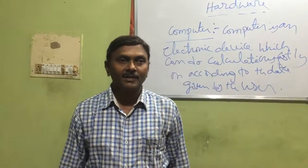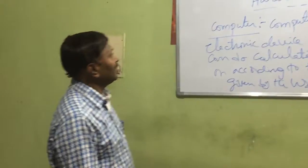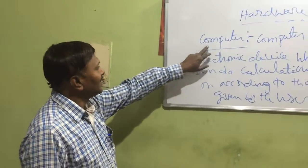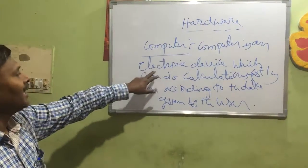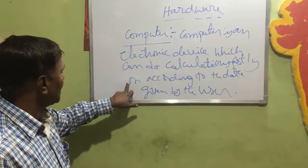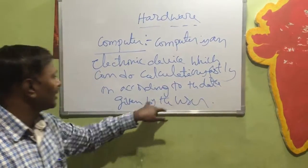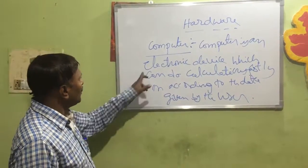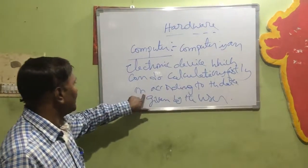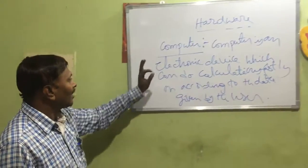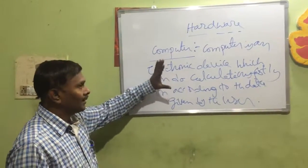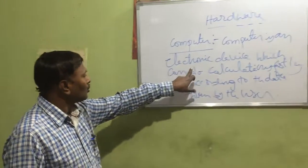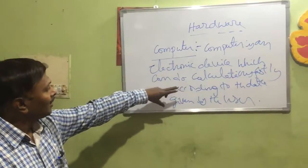Today we will discuss about hardware. But first, we will discuss the basic concepts about a computer. A computer is an electronic device which can do calculations according to the data given by the user. It means the computer never works on its own — the operator has to give data to the computer. It will then do calculations, processing, comparisons, and all those things.